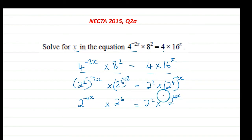Now what do we do when we have indices and we multiply them? We add powers. So now I can add the powers: 2^(-4x+6) = 2^(2+4x).